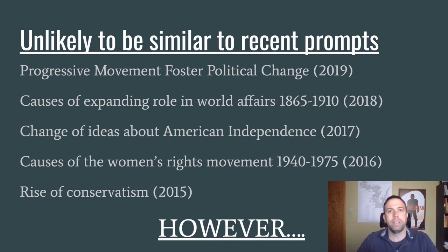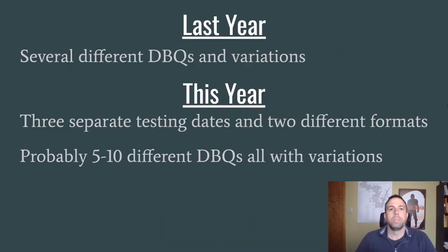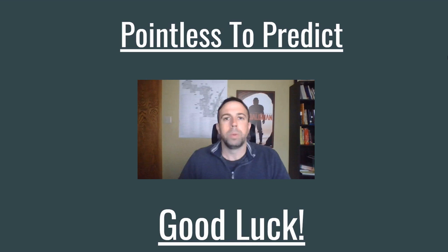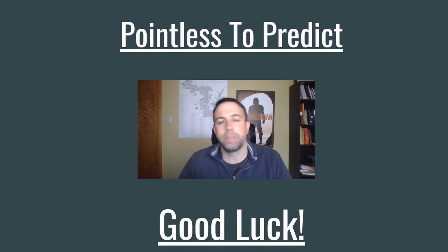However, I wouldn't totally rule out these topics not showing up on the exam, because last year there were several different DBQs and variations on those DBQs with different documents. So this year, we know that there are three different testing dates and different formats — the paper and the online version. I'm betting there's going to be several different prompts possible for the DBQ, and they're not going to repeat from version to version. So I'm betting there's going to be somewhere between five and ten DBQ prompts, and probably even more variations too. What I'm trying to say is, it's kind of pointless to predict the DBQ prompt.